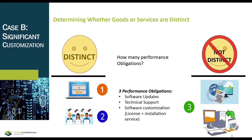The company considers the specific facts and circumstances of the contract to determine whether it should recognize revenue related to the software customization performance obligation as it performs the installation service or at the point in time the customized software is transferred to the customer. In summary: if a customer requires significant customization, the software license and installation service are likely not distinct and are categorized as one performance obligation. However, if they stand alone and do not significantly change the license or service, they are likely separate performance obligations.